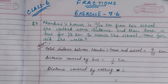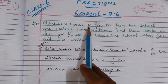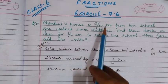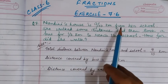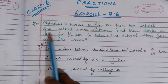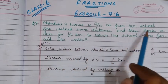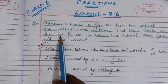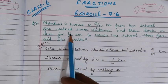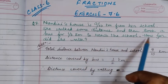Question number 7 says: Nandini's house is 9/10 km from her school. She walked some distance and then took a bus for 1/2 km to reach the school.